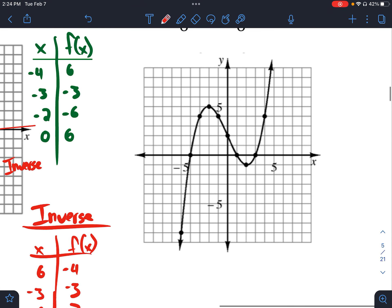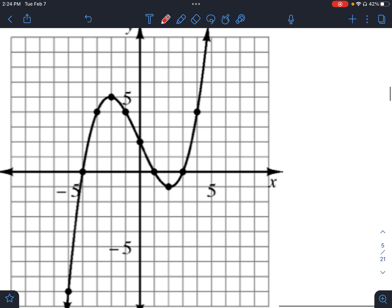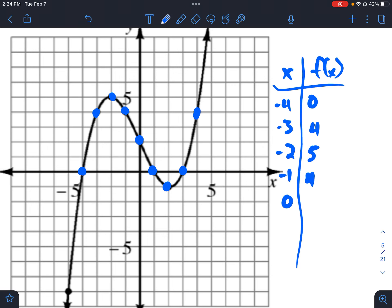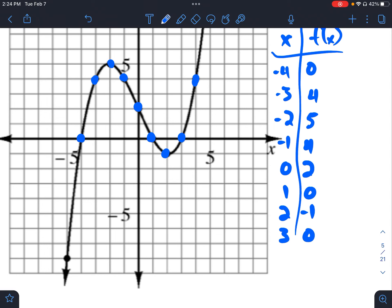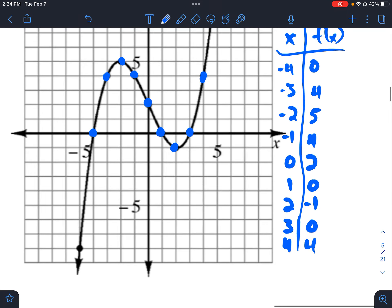And our last one, our cubic, same idea. We've got lots of points here, but it shouldn't be too difficult for us. All right, so we have our x and f(x) table. We have negative 4, 0, negative 3, 4, negative 2, 5, negative 1, 4, 0, 2, 1, 0, 2, negative 1, 3, 0, and 4, 4.